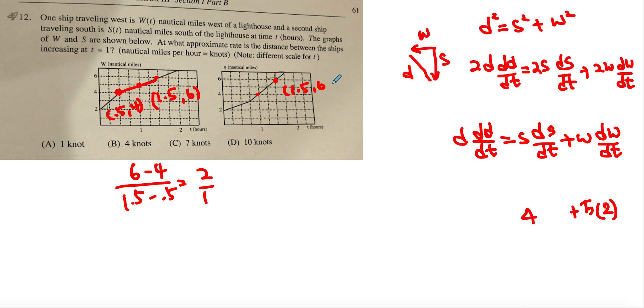1.5 comma 6 and 1 comma 4. Then to find the slope we get to realize 6 minus 4 over 1.5 minus 1. Top is equal to 2, bottom is equal to 0.5, which is equal to 4. So ds dt would be equal to 4.